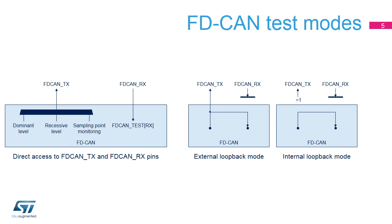These test modes should be used for production tests or self-test only. Furthermore, the FDCAN controller supports two loopback modes entered through control bits in the FDCAN test and FDCAN CCCR registers. In external loopback mode, the FDCAN treats its own transmitted messages as received messages and stores them, if they pass acceptance filtering, into RX FIFOs. This mode is provided for hardware self-test; to be independent from external stimulation, the FDCAN ignores acknowledge errors in loopback mode. Internal loopback mode can be used for a hot self-test, meaning the FDCAN can be tested without affecting a running CAN system. In this mode, FDCAN RX pin is disconnected from the FDCAN and FDCAN TX pin is held recessive.